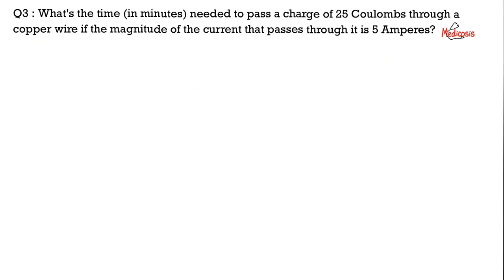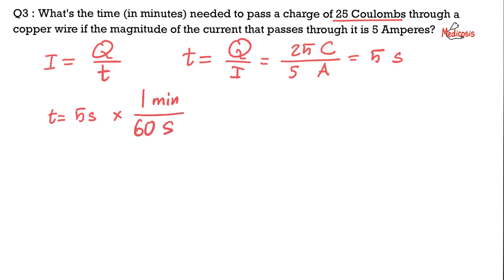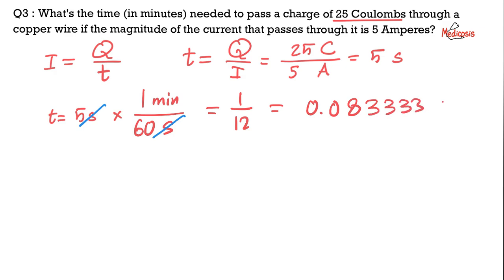Next question: what's the time in minutes needed to pass a charge of 25 coulombs through a copper wire if the magnitude of the current is 5 amperes? We know I equals Q over T, rearranged to T equals Q over I. So T equals 25 coulombs divided by 5 amperes, giving 5 seconds. To convert to minutes: 5 seconds times 1 minute over 60 seconds equals 1/12, which is approximately 0.0833 minutes.